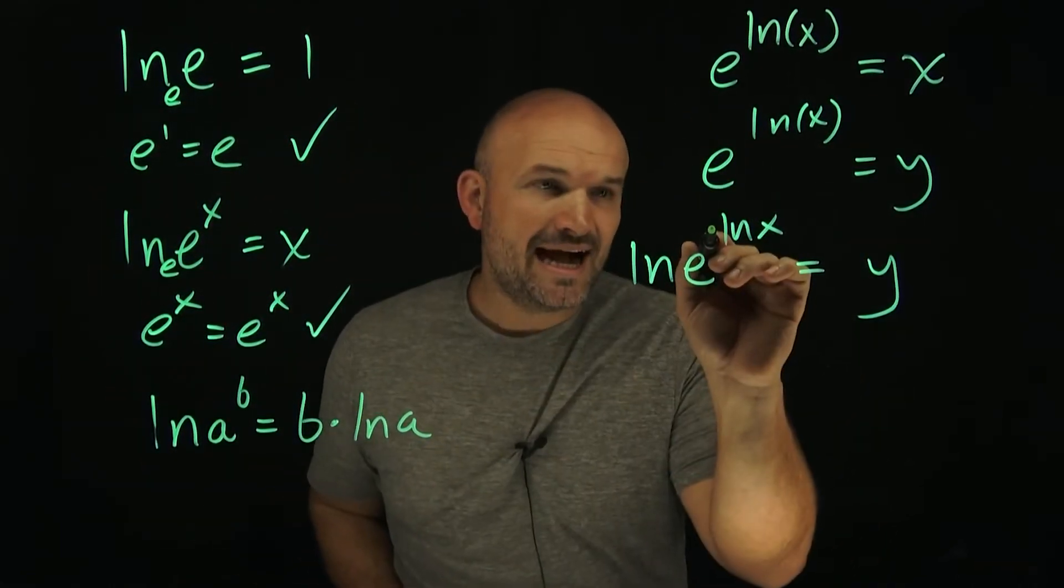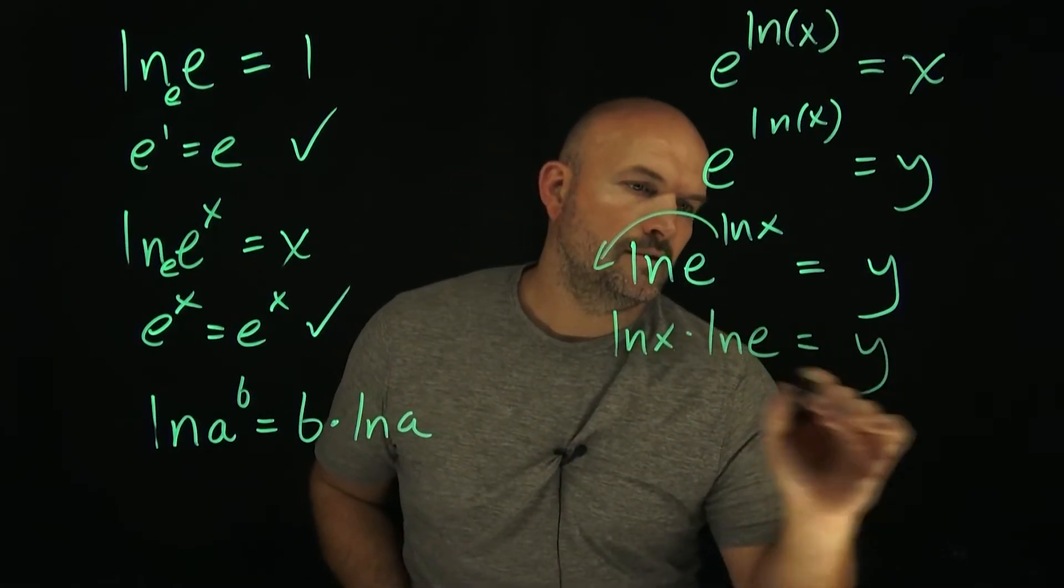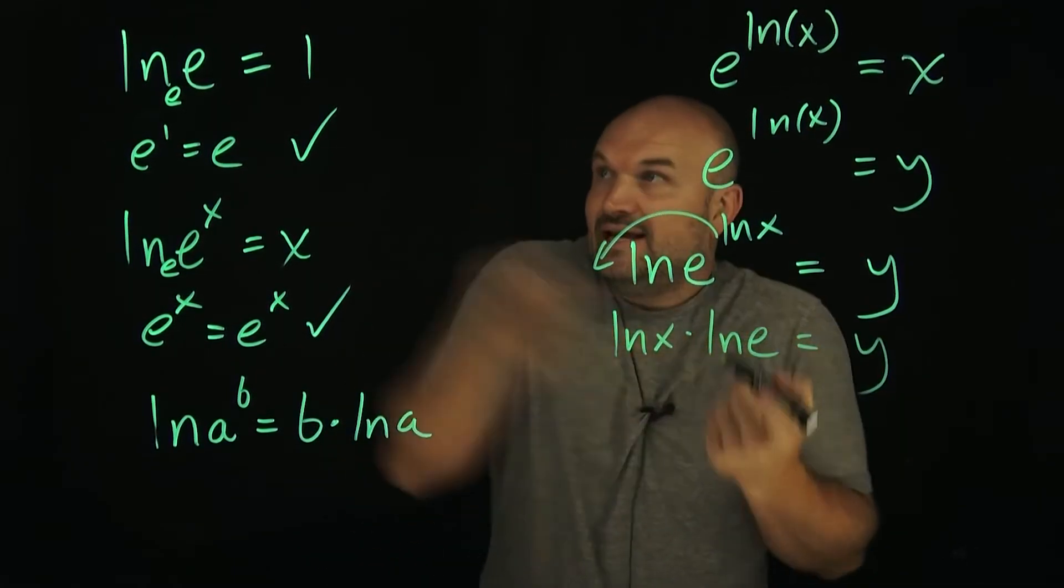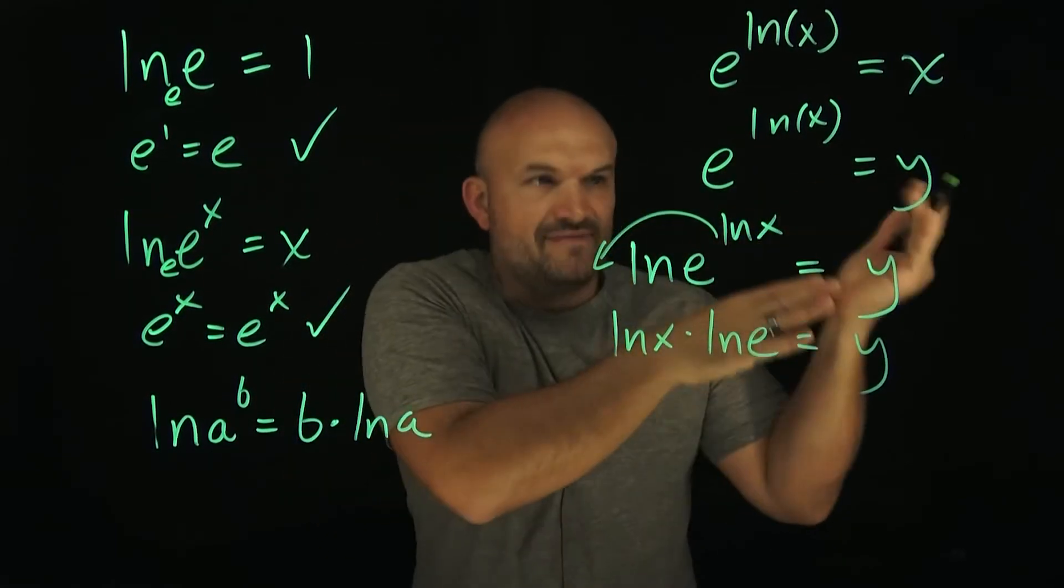What that means is I can now take this and write it in front. And then hopefully you recognize here, ln of e is equal to one. So we're going to get the exact same thing if you just say this goes away and it gets ln of x equals y.